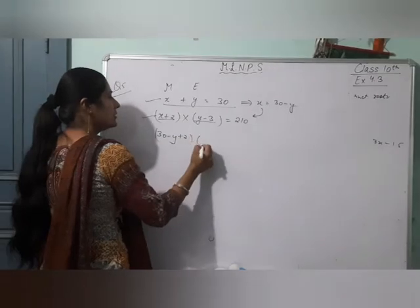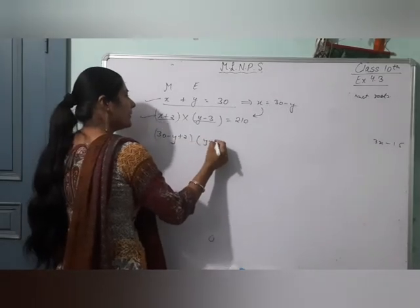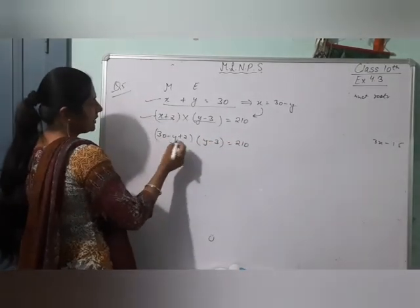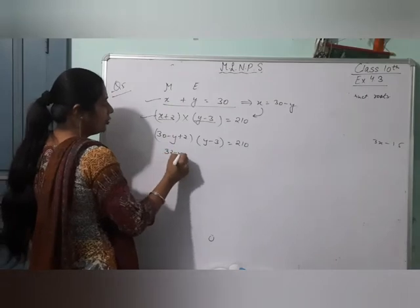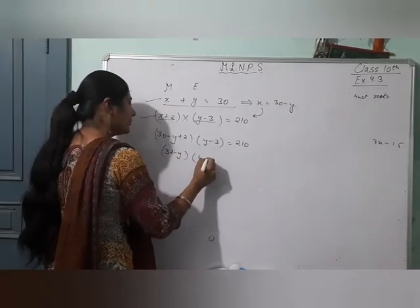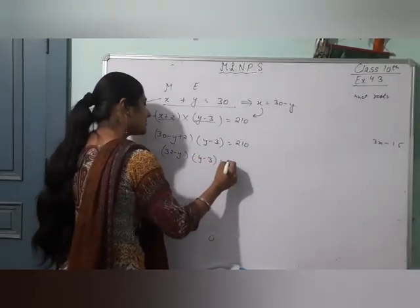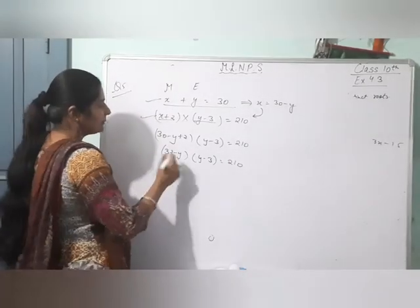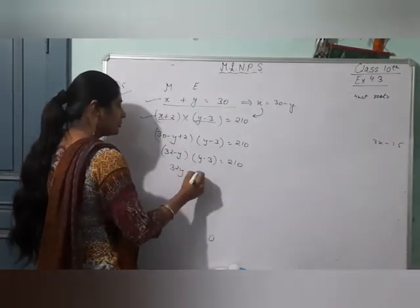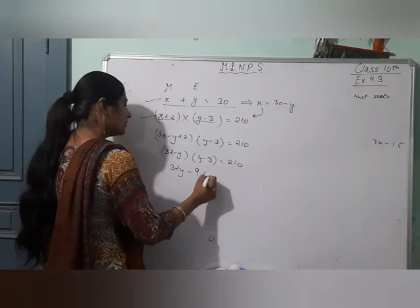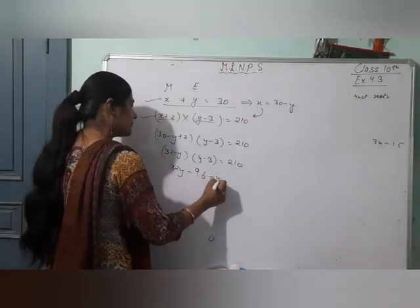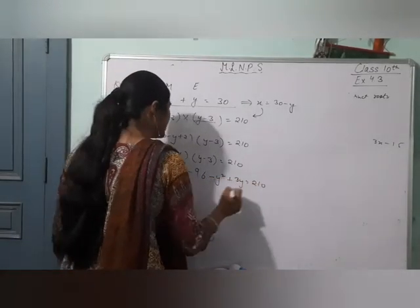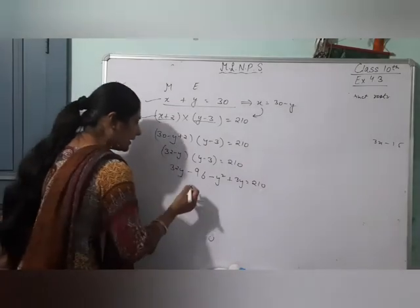X ki value 30 minus y aa jaayegi. Put karenge is equation mein: (30 minus y plus 2)(y minus 3) equals 210. So (32 minus y)(y minus 3) equals 210. Ye equation y mein aa rahi hai.